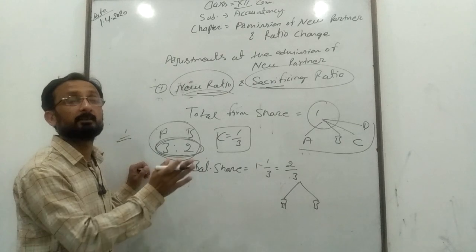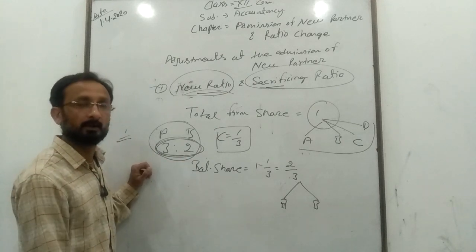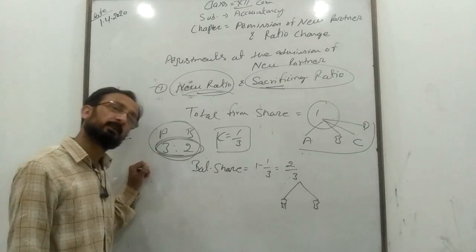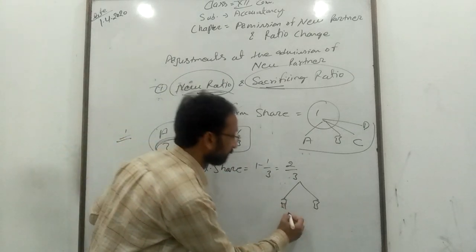If you have any additional information, you need to balance your balance. So what do you need to do with this 2 upon 3?